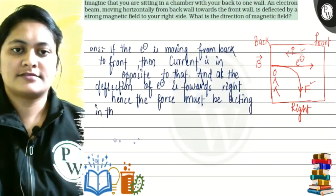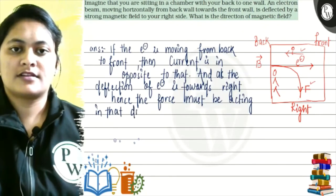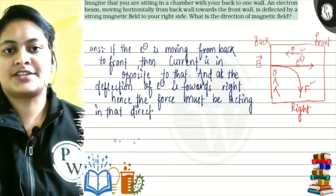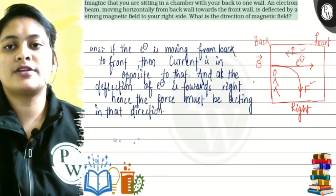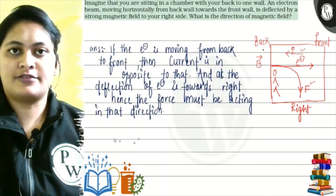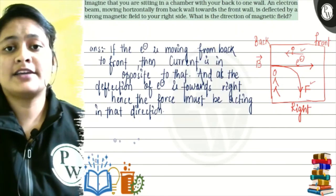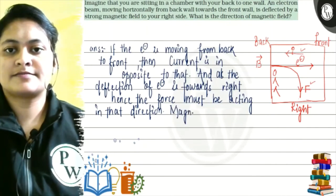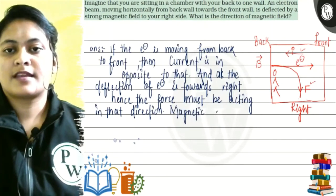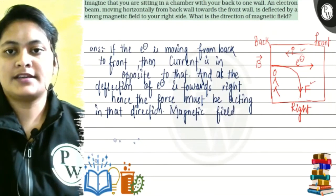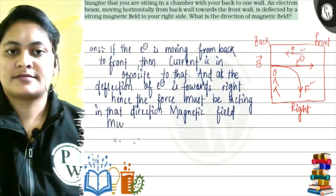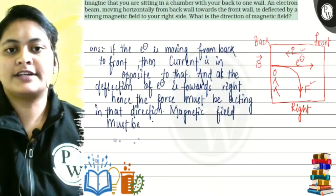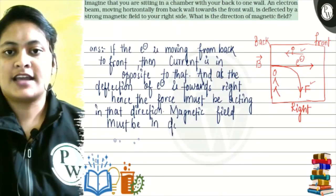Right? If the force is in this direction, and our electron is moving from here, current is flowing from here, then what will the magnetic field be? So, the magnetic field must be in downward direction. Here, how do we know?